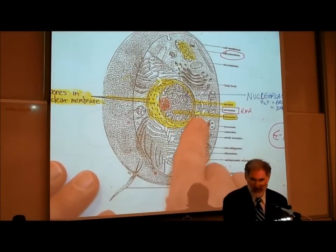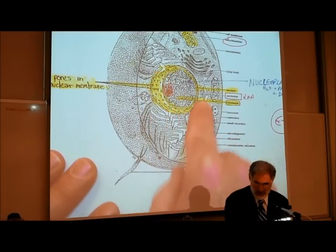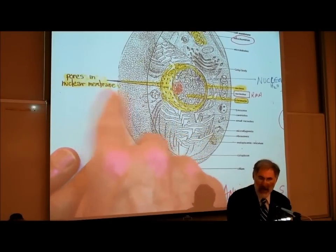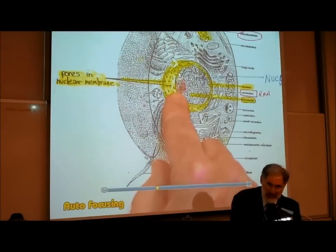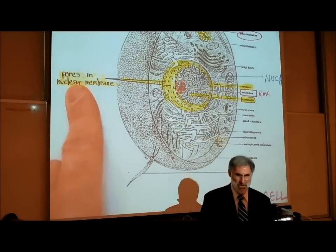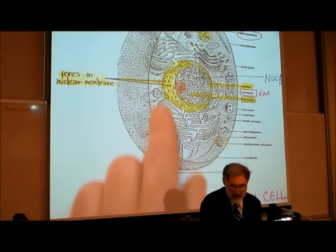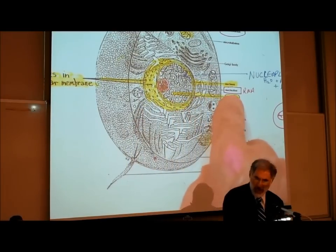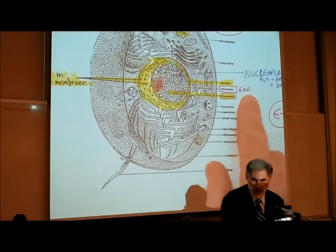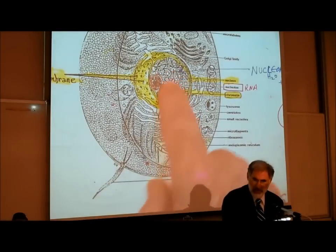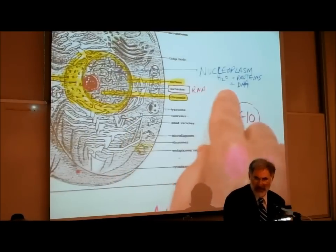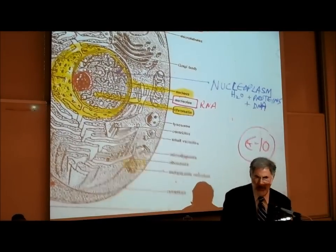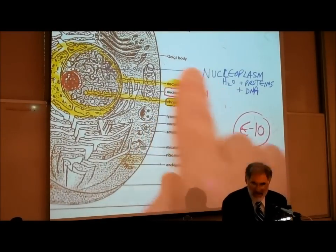I want to draw your attention to a few things with this upper picture. This is the nucleus, labeled on the right. You'll notice that there's a nuclear membrane, and on the left-hand side you can see there are holes or openings in the nuclear membrane — these are called pores, or openings, through which chemicals can go in or out of the nucleus. The jelly-like fluid inside the nucleus is called nucleoplasm.